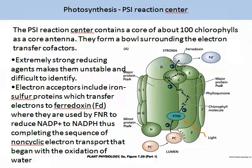This is a more detailed visualisation of the photosystem I reaction centre. The photosystem I reaction centre contains a core of about 100 chlorophylls as a core antenna, forming a bowl-like structure surrounding the electron transfer cofactors. Extremely strong reducing agents make up unstable and difficult-to-identify components. Electron acceptors include iron-sulphur proteins, which transfer electrons to ferredoxin, also called FD, where they are used by FNR to reduce NADP⁺ to NADPH, completing the sequence of non-cyclic electron transport that began with the oxidisation of water.